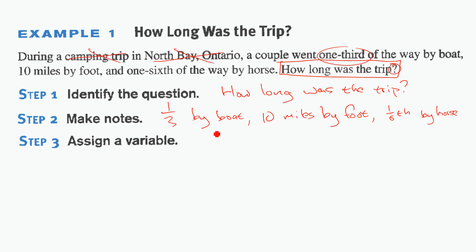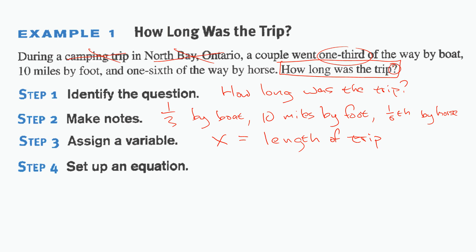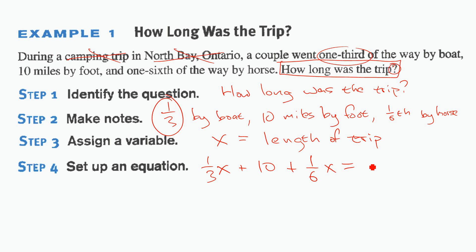Now we go from words to math. We assign a variable: x equals the length of the trip. Set up the equation: one-third of x (by boat) plus 10 (by foot) plus one-sixth of x (by horse) equals x, the whole length. So: (1/3)x + 10 + (1/6)x = x.